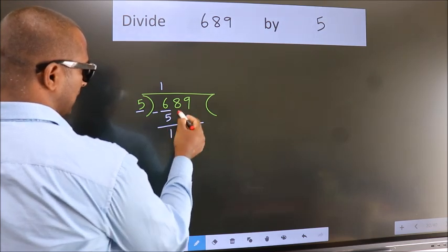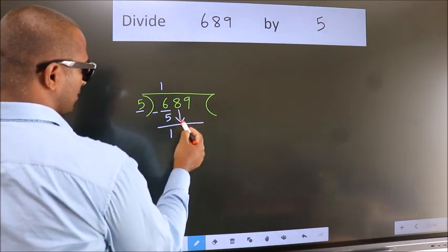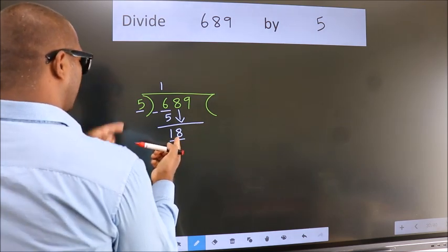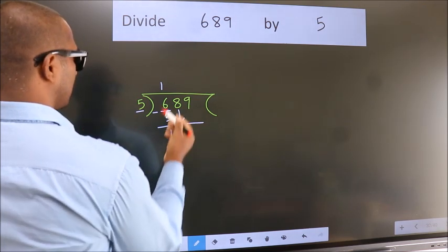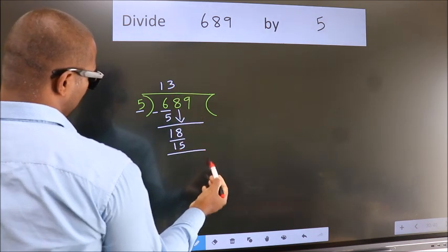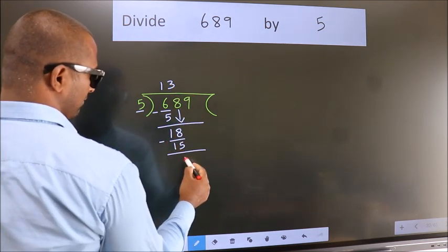After this, bring down the beside number. So, 8 down. So, 18. A number close to 18 in 5 table is 5 threes 15. Now, we subtract. We get 3.